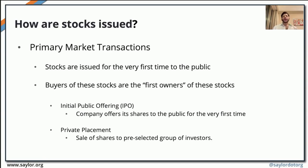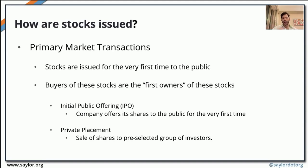If we want to look at the way stocks are issued — remembering that we have primary market transactions and secondary market transactions — primary market transactions are stocks being issued and traded for the very first time to the public. Buyers of these stocks are first-time owners of the issued shares. This can happen through an initial public offering or through private placement.